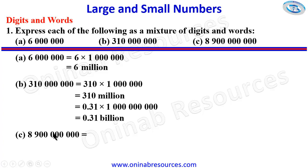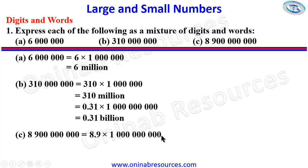For part c, counting from the right: one, two, three groups — that puts us in billions. Because of the nine, it starts with nine hundred something. Dividing by one thousand gives eight point nine times ten to the nine places, which is billions. Multiplying eight point nine by one billion gives the original number — nine digits confirmed. So we write it as eight point nine billion.